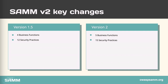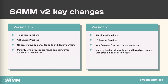Between version 1.5 and 2, a new business function was added with three security practices. This information was already there, spread around in other business functions, and we decided to pull it out and create a new business function. We've also added prescriptive guidance related to secure build and secure deploy, which was not in the previous version. We've aligned the maturity level activities and linked them in streams — each stream has a clearly defined objective. In most streams, maturity level activities are designed in order of increasing difficulty and implementation cost.